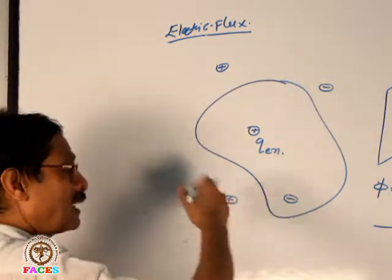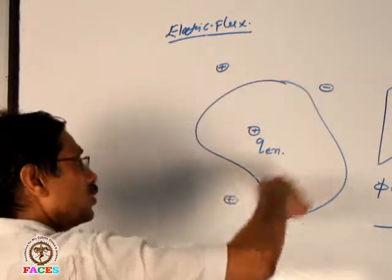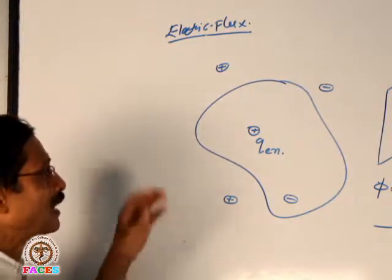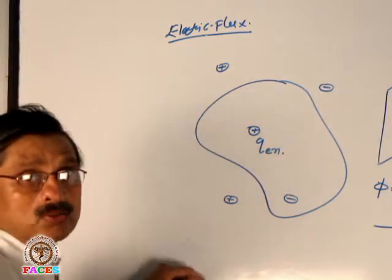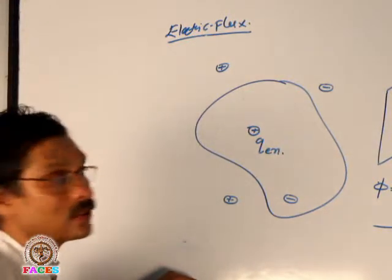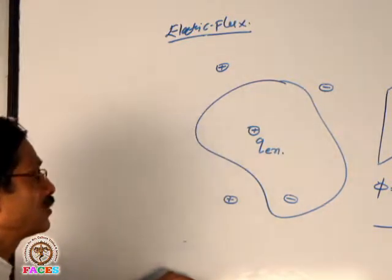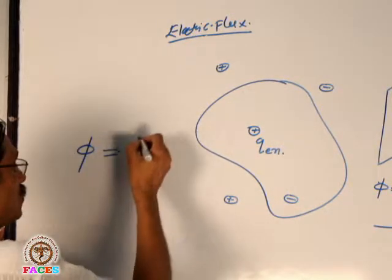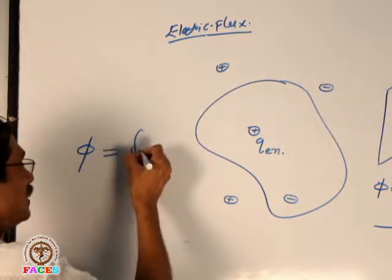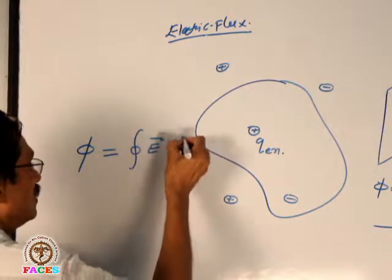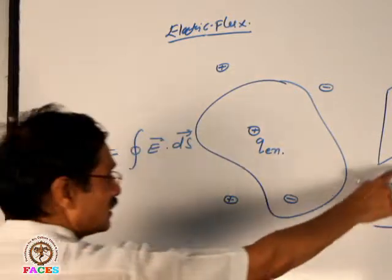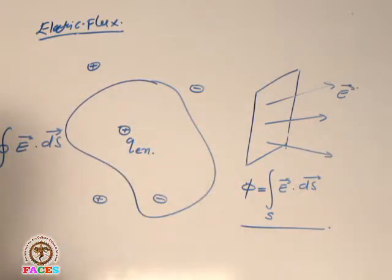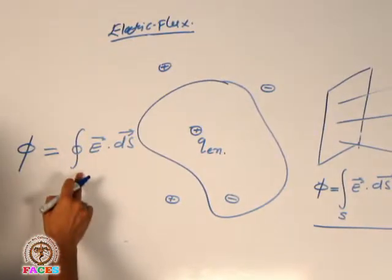In space we can create an imaginary closed surface. Our task is to calculate the total flux. Gauss's theorem says this total flux can be mathematically calculated as the E·ds surface integral — integration over the entire closed surface.